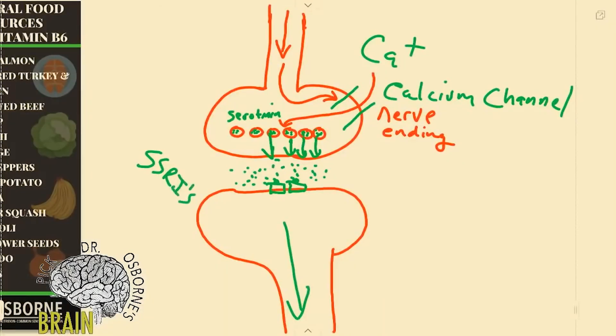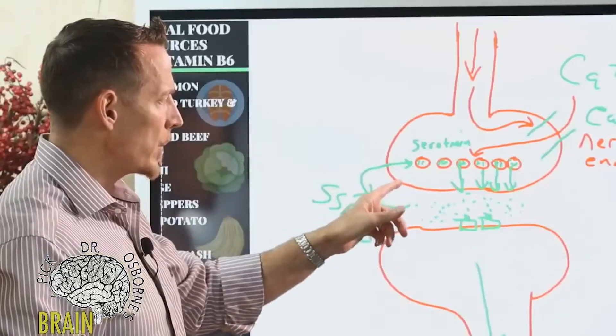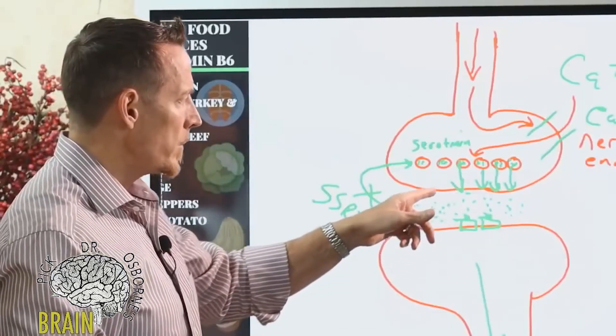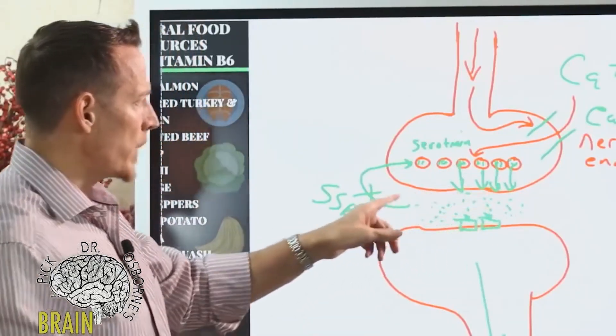So SSRIs as a class of drug, what they do is your body naturally recycles and repackages serotonin back into these vesicles. These drugs block that. Why is that important for you to understand? The drugs don't increase your body's ability to make serotonin, they just preserve how long the serotonin is capable of doing its job.